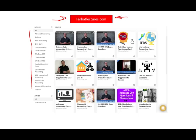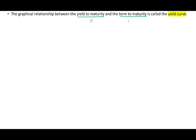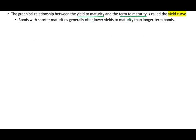Let's talk about the yield curve. What is the yield curve? It's a graphical relationship between the yield to maturity — a rate — and the term, the time. We're going to be dealing with treasury bonds because we're dealing with government bonds — it's a risk-free rate. Bonds with shorter maturity generally offer lower yields to maturity than long-term bonds.